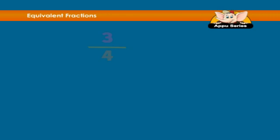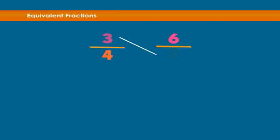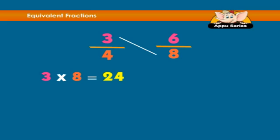Let's check if three over four and six over eight are equivalent fractions. The first cross product is the product of the first numerator and the second denominator. That is three multiplied by eight is twenty-four. The second cross product is the product of the second numerator and the first denominator. Six multiplied by four is twenty-four.